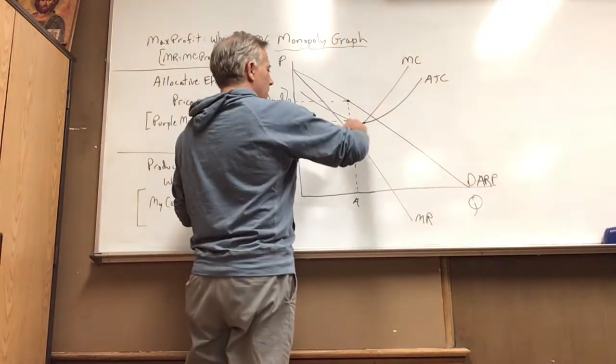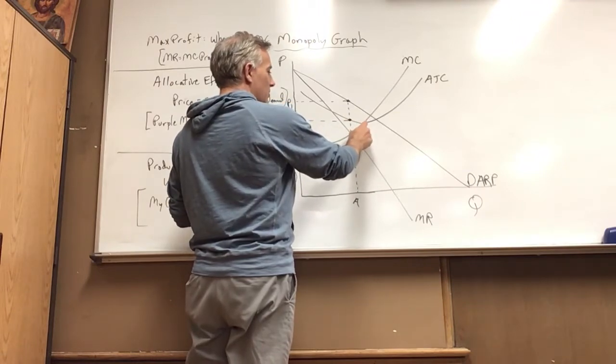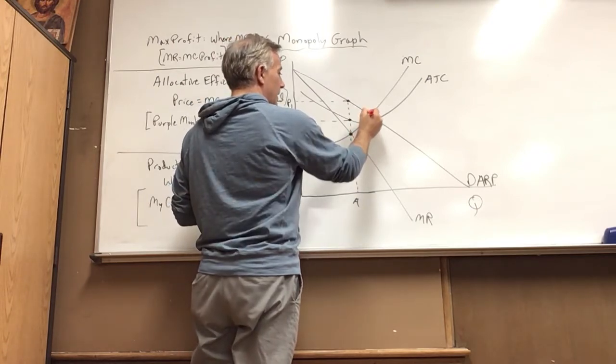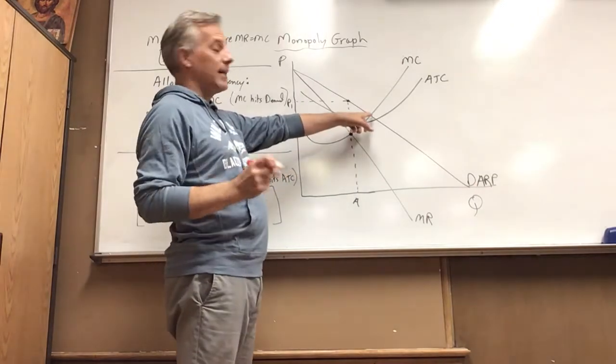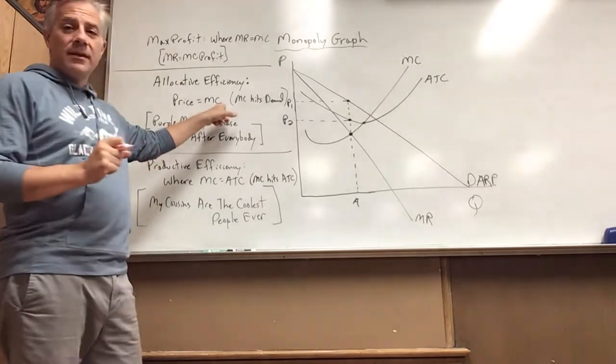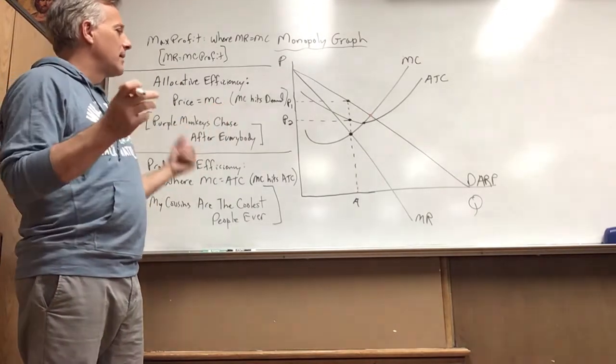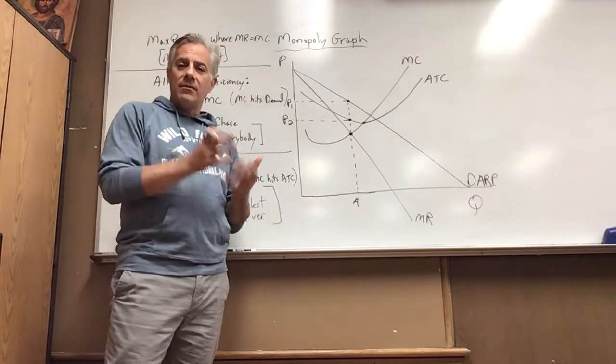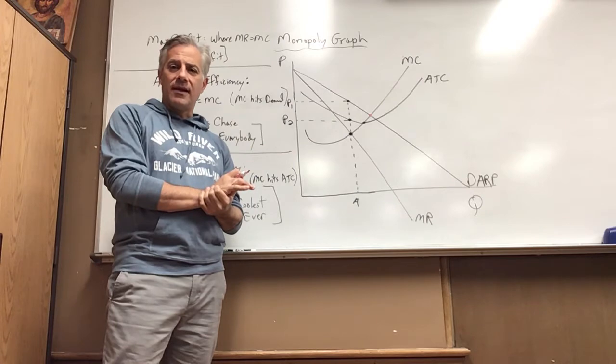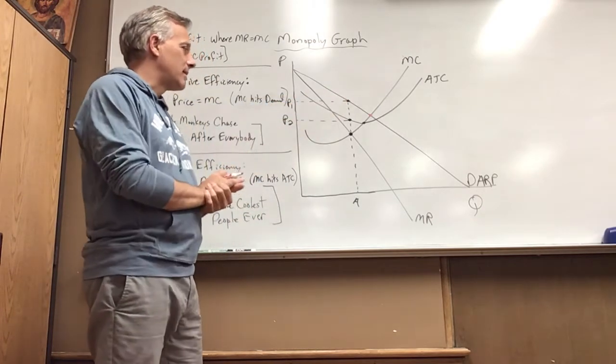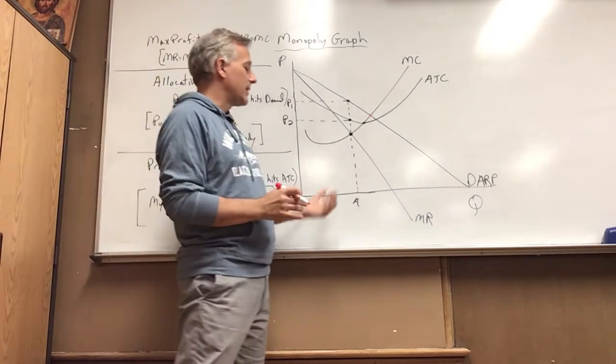We're following the marginal cost curve. This is the intersection with average total cost, so the price is not there - that'll be important later. Here is our allocatively efficient quantity where MC hammers the demand curve, where MC hits demand. Price equals marginal cost - that's allocative efficiency. That would be the socially optimal, a fair price for a fair cost, everybody wins scenario. Obviously the price is higher than that where we want it to be, and we're producing at a lower quantity.